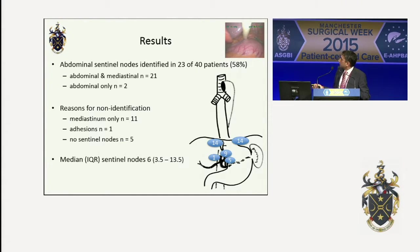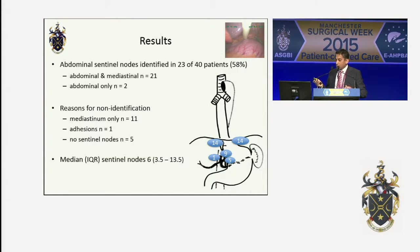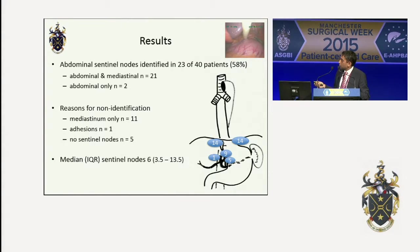When we consider the laparoscopic identification of central nodes, we managed to do this in 23 of the 40 patients. In these 23 patients, only two had only abdominal central nodes; 21 actually had central nodes across both sides of the diaphragm. There were a number of patients in whom we couldn't identify laparoscopic central nodes — 11 because their central nodes were up in the mediastinum, and 5 because there were no central nodes. The overall median central nodes identified was 6.